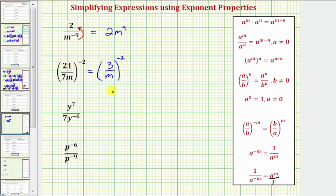To show a little work here, 21 is equal to seven times three. Seven m is equal to seven times m. Seven divided by seven simplifies to one, leaving us with three divided by m.